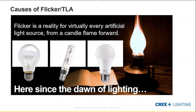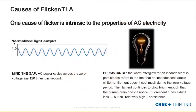Flicker has been with us since any artificial light source was created — candle forward, really since the dawn of lighting. All lighting technologies have some level of flicker present; it's just whether or not it's visible or, even if it is, whether it's bothersome. A candle flame or firelight might actually feel quite inviting. Thinking about electric lighting, one of the causes of flicker is really just the nature of AC electricity — alternating current — which you can see as a waveform going up and down.